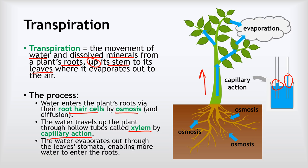Lastly, the water evaporates out of the plant through the leaves' stomata, which then enables more water and minerals to enter the roots. The evaporation stage is really important because it creates the space for more water to enter at the bottom, creating a continuous flow of water coming in at the bottom of the plant and evaporating out of the top, drawing more water and minerals up with it as it evaporates.